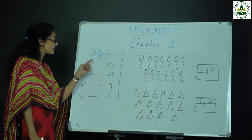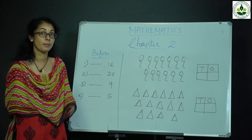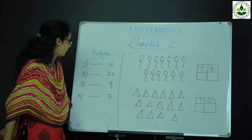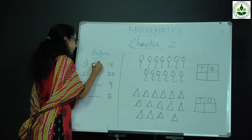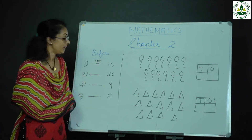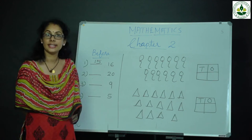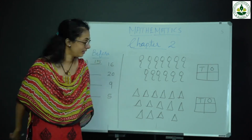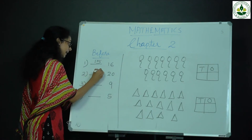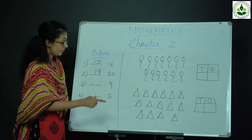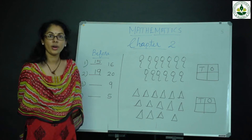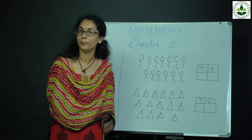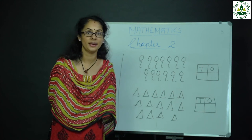Which number comes before 16? Which number comes before 16? Number 15 — very good. Then which number comes before 20? Number 19 — very good. Then which number comes before 9? Number 8.